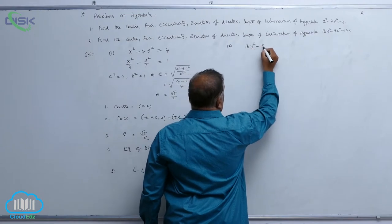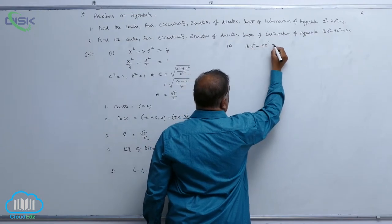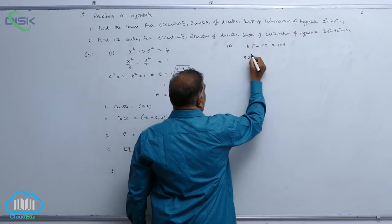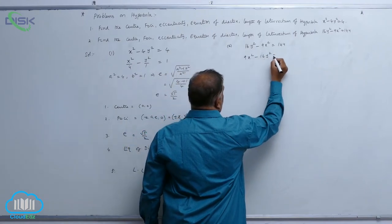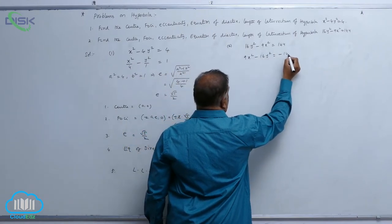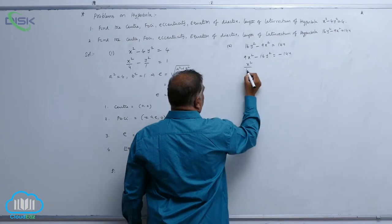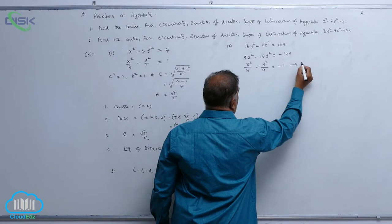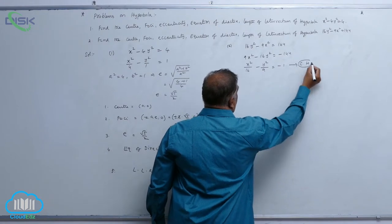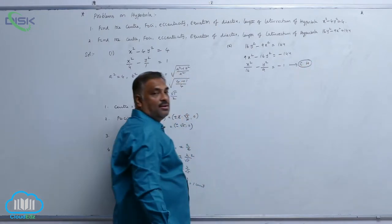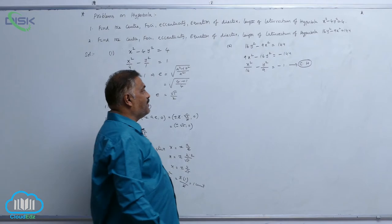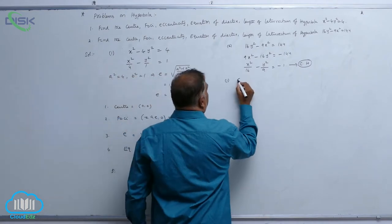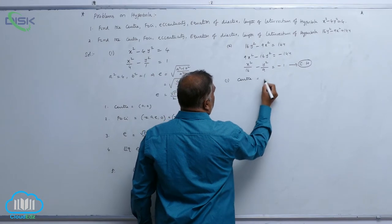Now let us come to the second problem: 16y² - 9x² = 144. Rearranging: -9x² + 16y² = 144, which gives x²/16 - y²/9 = -1. This is a conjugate hyperbola — please be careful about this. The center is (0, 0).